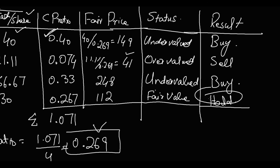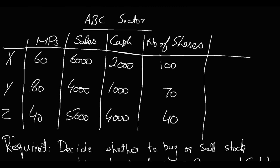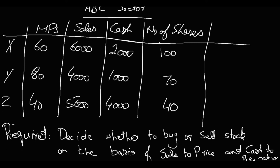So this is one method — the cash-to-price ratio. Now you have to solve some practice questions. In the ABC sector, there are three companies: X, Y, and Z. You are given their market price per share, sales, cash, and number of shares. You have to determine using both ratios whether to buy or sell the stock.